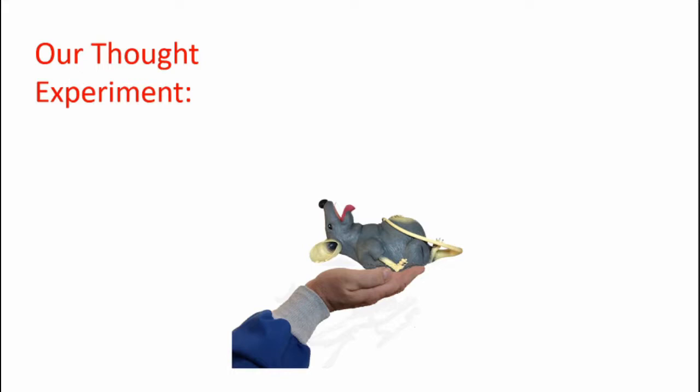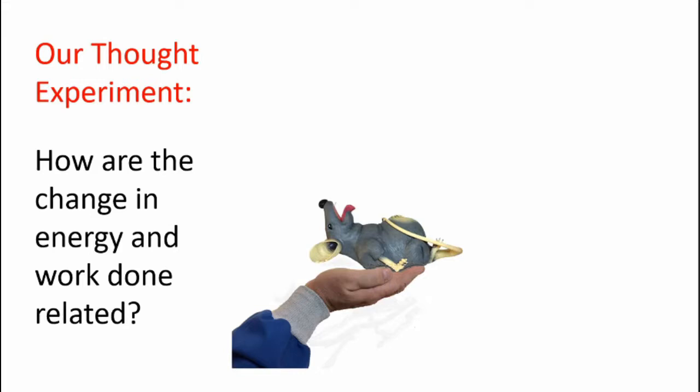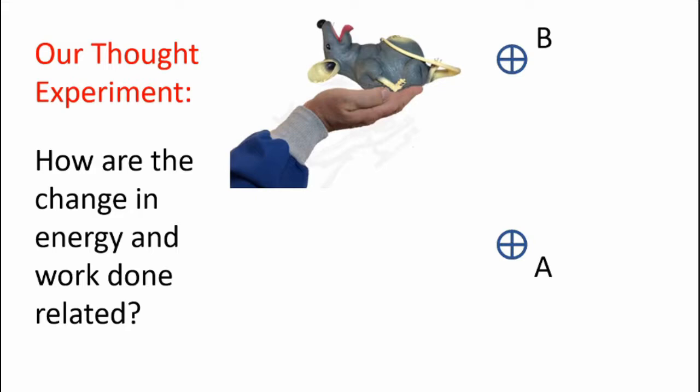Okay, so let's go ahead and set up our thought experiment. Now one thing to keep in mind, during this experiment, no rubber rats were harmed. So what we want to know in this experiment is how are the change in energy and work done related. Now what we want to do is start with Louis at point A and lift him to some point B. Now we define this as delta H is a change in height.